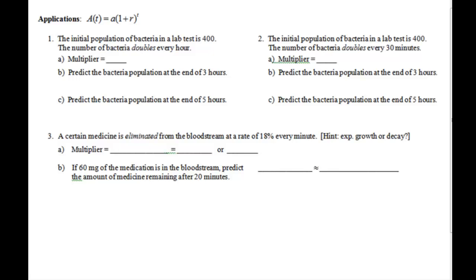Applications. We have A(T) equals A times (1 plus R) to the T. Really, this is exactly what we just used: y equals A times B raised to the x power. So if we look at the initial population of bacteria in a lab test is 400, and the bacteria doubles again, our multiplier is going to be 2. We need to predict the population at the end of 3 hours. If it doubles every hour, we need to know what are we starting off with. That A term is where we're going to start. So we're taking the 400. It's doubling each hour. How many hours are we going to double it? We're going to double it 3. So we'll raise this to the 3rd power. And you end up getting 3,200 bacteria.